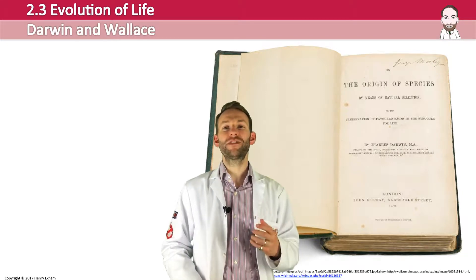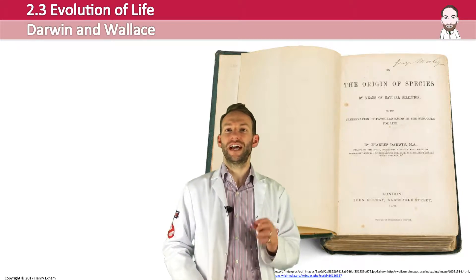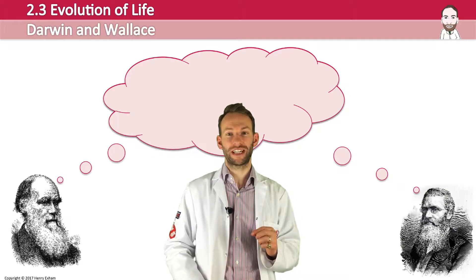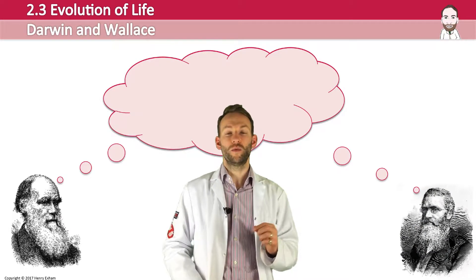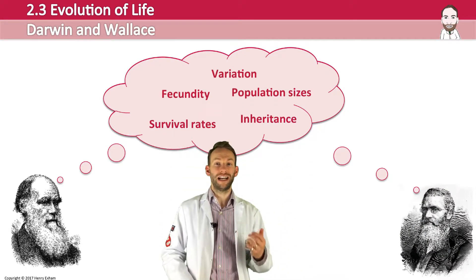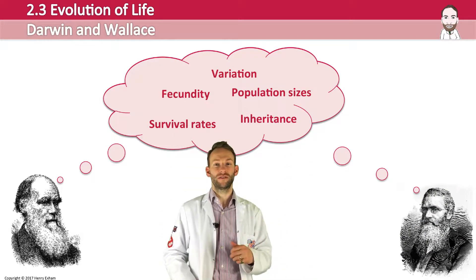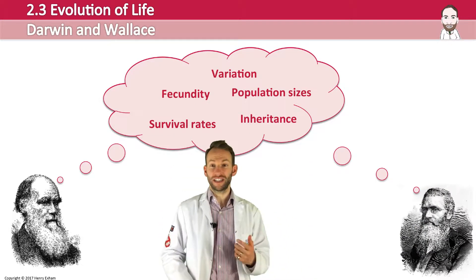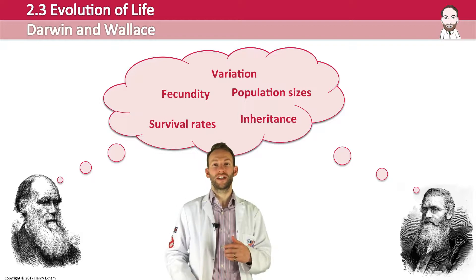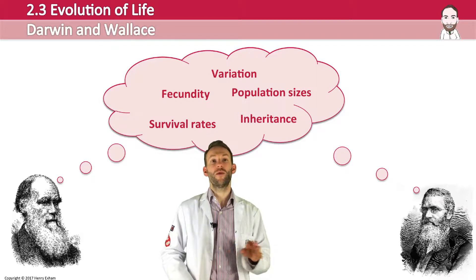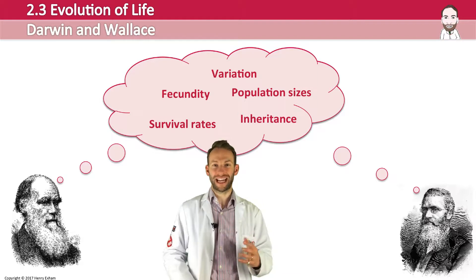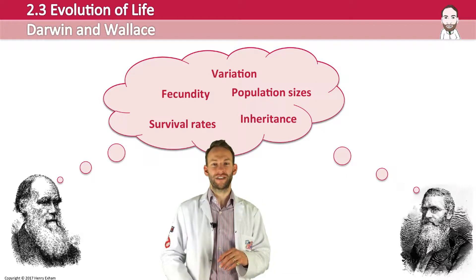The main observations and ideas that led Darwin and Wallace to the theory of natural selection were: variation, fecundity, population sizes, survival rates, and inheritance. We'll briefly talk about each of these categories.